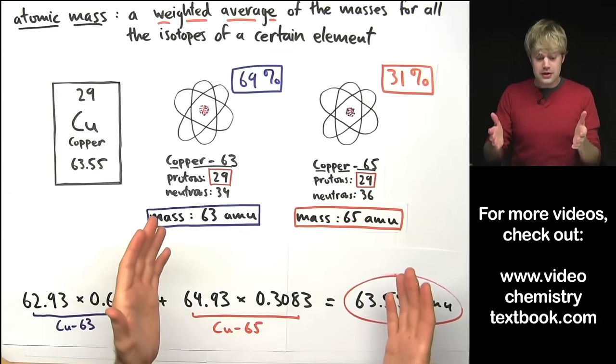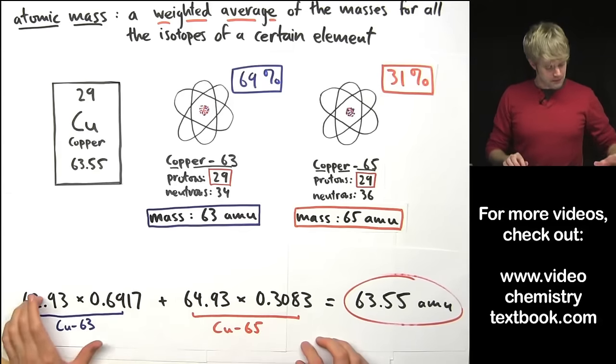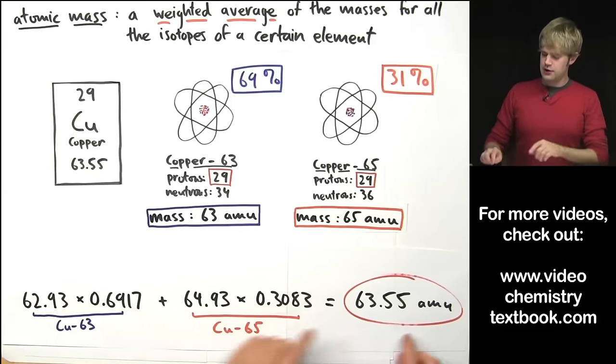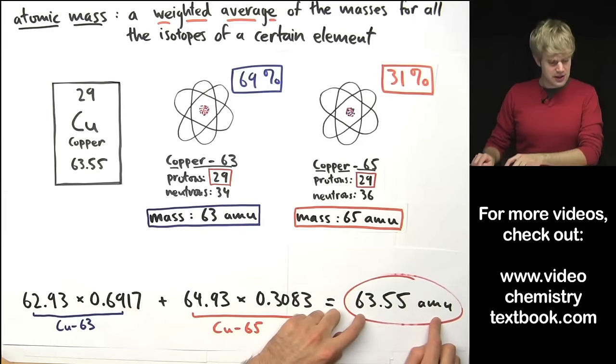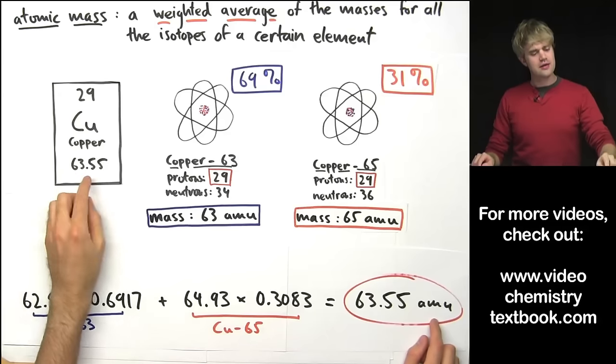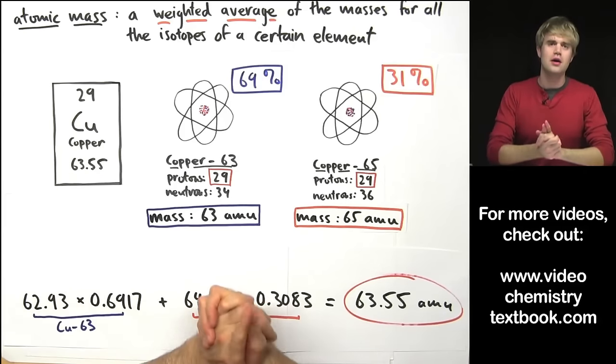But the point is when you do take these numbers into account and you do the weighted average calculation you end up with an atomic mass in AMU that is exactly the same as what you find on the periodic table.